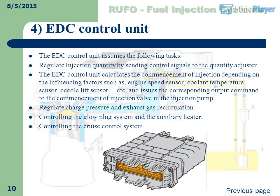EDC Control Unit: The EDC control unit assumes the following tasks — regulate injection quantity by sending control signals to the quantity adjuster; calculate the commencement of injection depending on influencing factors such as engine speed sensor, coolant temperature sensor, and needle lift sensor, then issue the corresponding output command to the injection valve; regulate charge pressure and exhaust gas recirculation; control the glow plug system and auxiliary heater; and control the cruise control system.